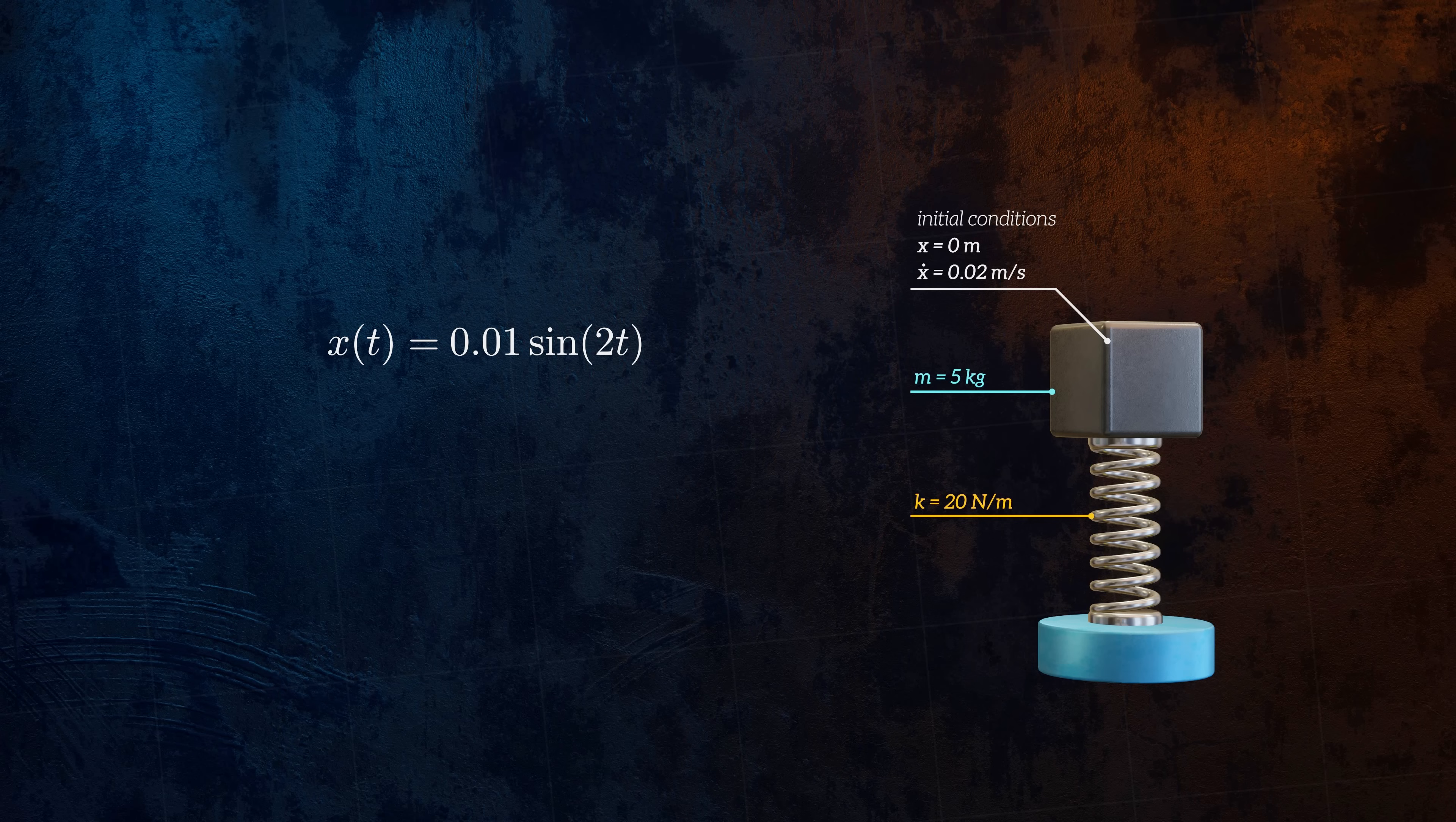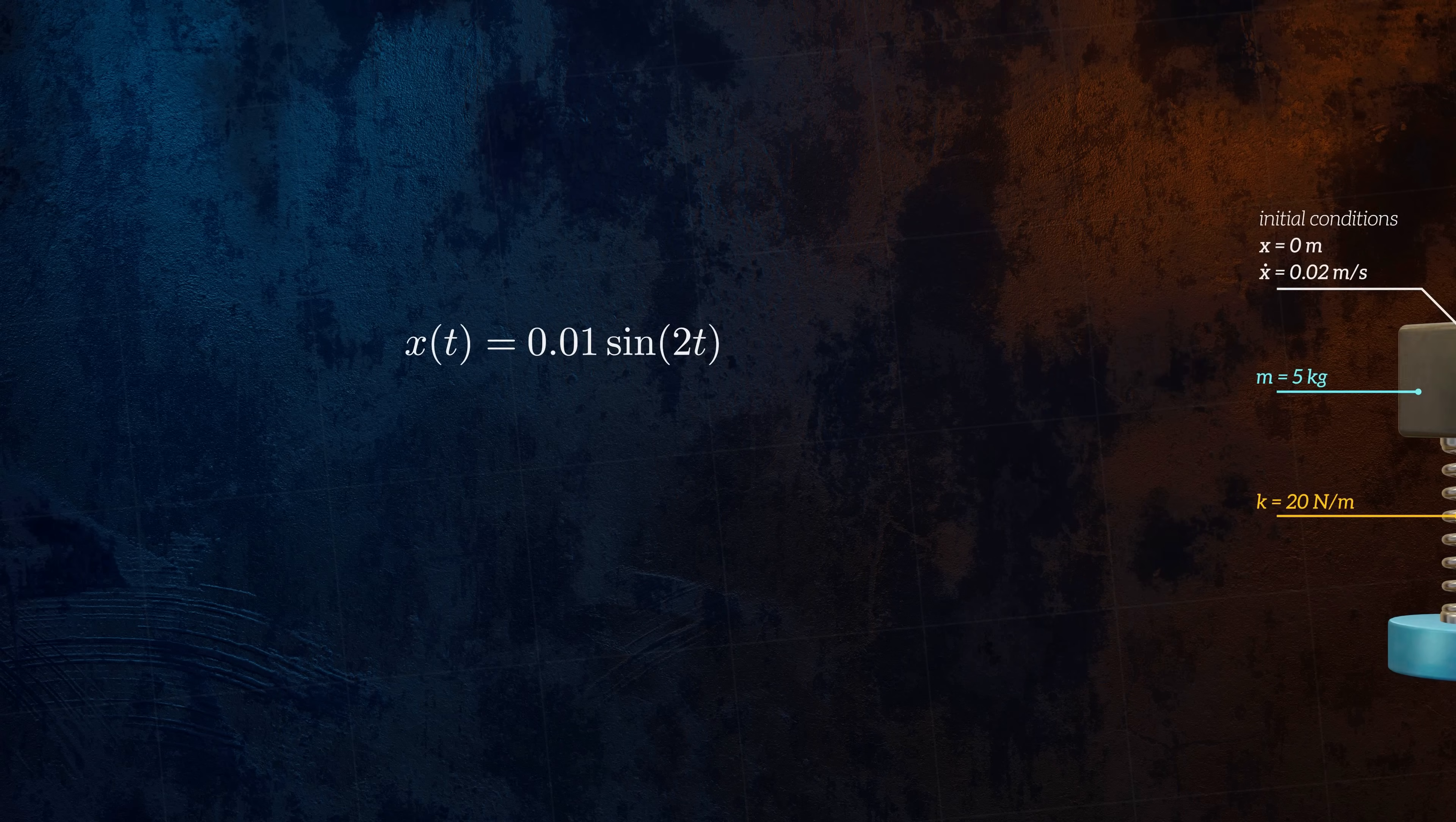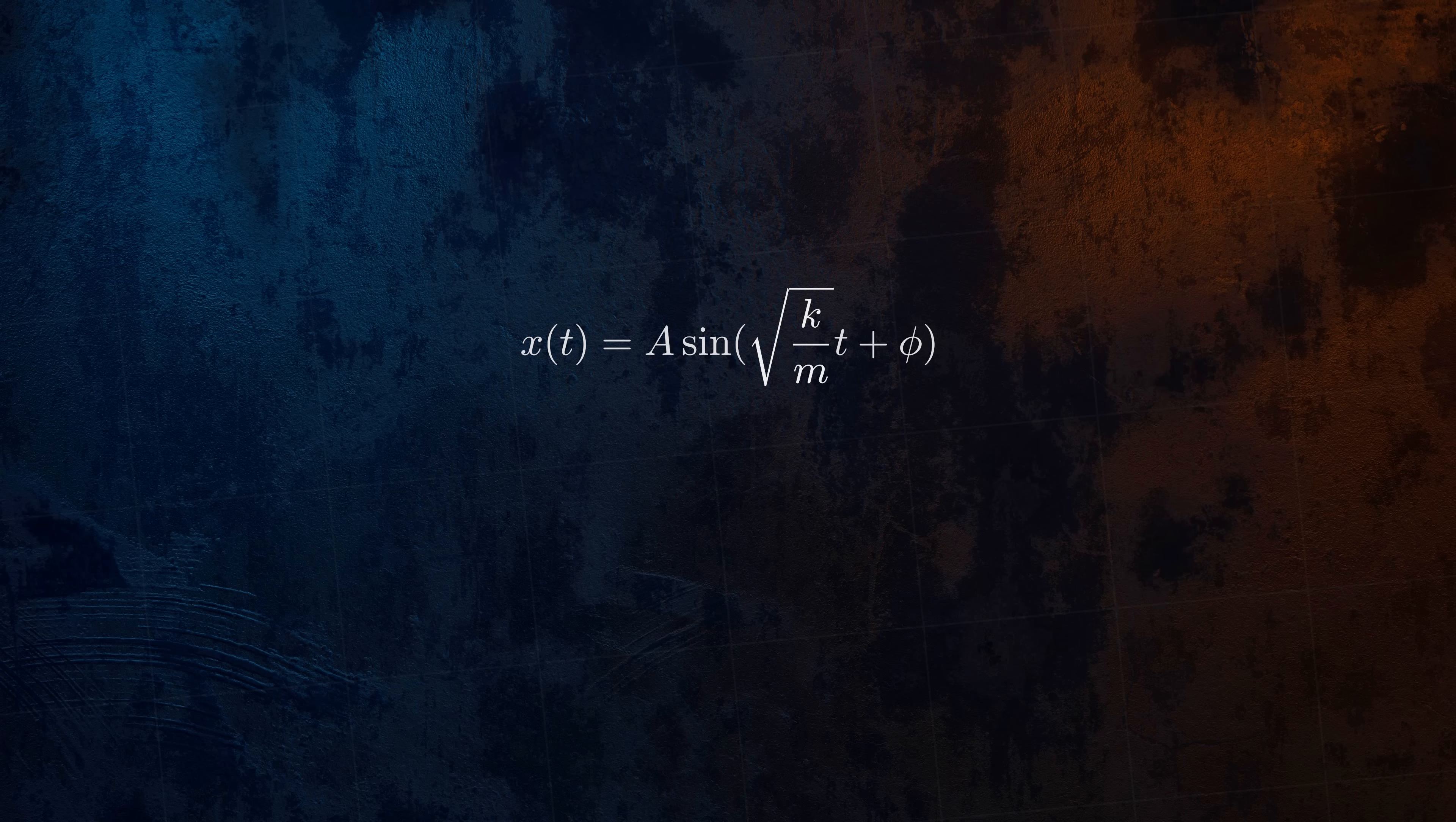An important property that can be calculated from a mass spring model is the system's natural frequency, the frequency at which it will oscillate naturally when in free vibration. It's given by this term in the equation of motion and is denoted using the Greek letter omega. It depends only on the mass and the spring stiffness, so no matter what the initial conditions are, a system will always oscillate at the same frequency.